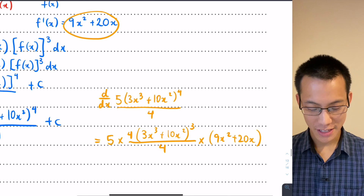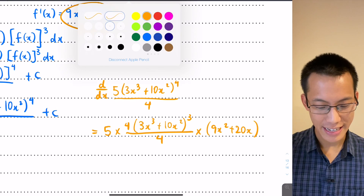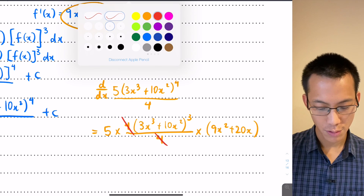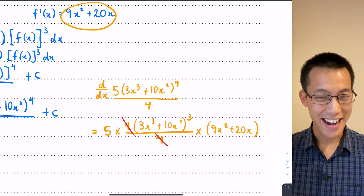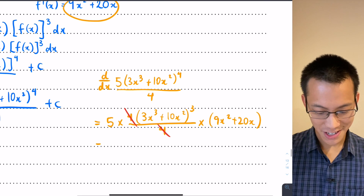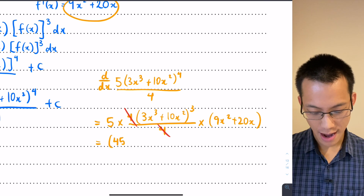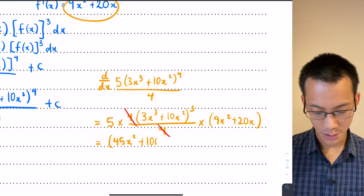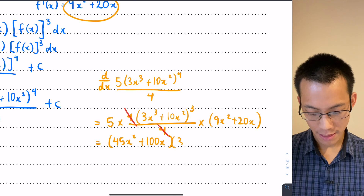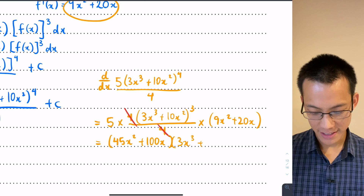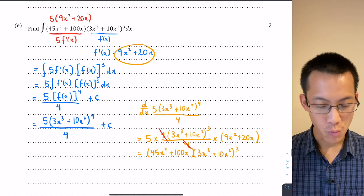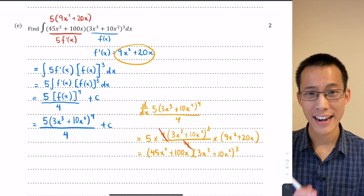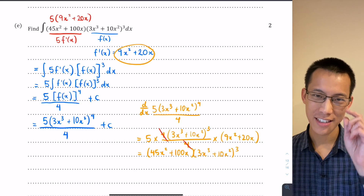Now I just tidy up: the 4 in the numerator and the 4 in the denominator cancel. Then 5 times (9x² + 20x) gives 45x² + 100x, multiplied by (3x³ + 10x²)³ — and you can see that exactly matches what was in the original question. So if you're ever in doubt and you have the time, check your integration by differentiating.